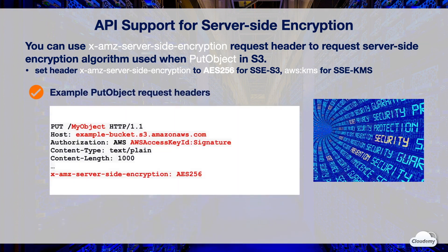Here is an example of put object request headers. It's uploading an object called my-object to the example bucket, and requesting server-side encryption using SSE-S3 with AES-256.